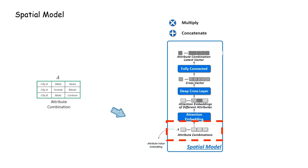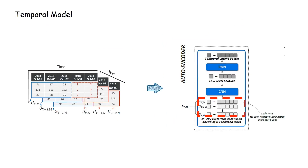Spatial model: in this component, attribute combinations are encoded into attention embeddings by group attention and deep cross layers. Next is the temporal model. We combine CNN, RNN, and DNN layers into one unified network. It captures information about the multi-dimensional time series at different scales and produces the temporal latent vector.